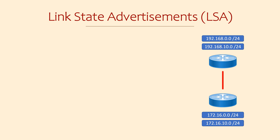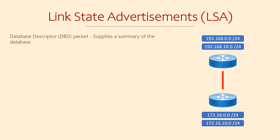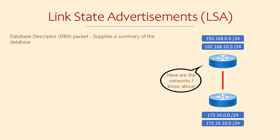OSPF has a few different packet types that it uses for communication. The LSA itself is the data structure within those packets. One type of packet is the Database Descriptor, or DBD. This contains a summary of the database. This is a lightweight way of telling a neighbor about each network without burdening it with detail. This is efficient, because the neighbor can ask for more information if it wants it, or leave it alone.